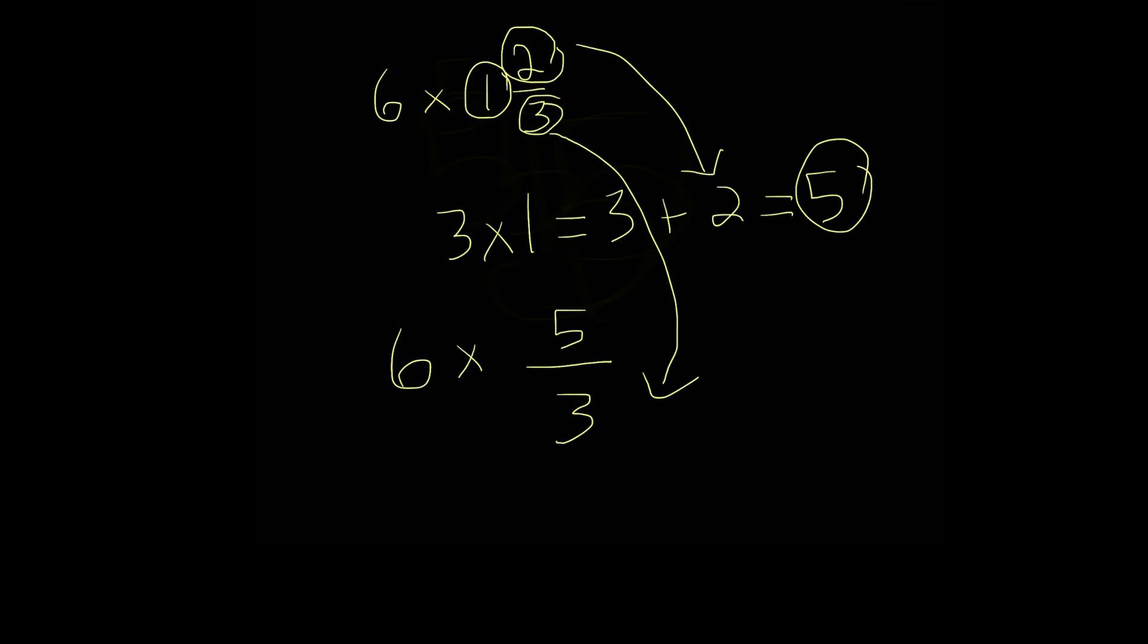And now we simply just multiply 6 with 5/3. 6 times 5 is 30. That's our numerator over 3. And 30 divided by 3, that's 10. So 10 is our answer.